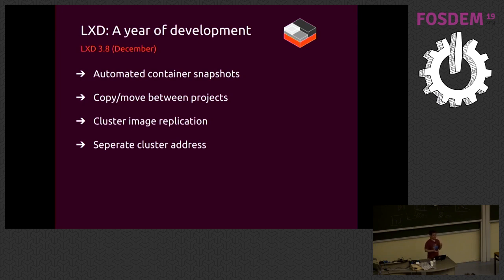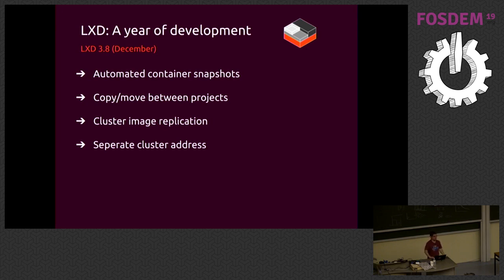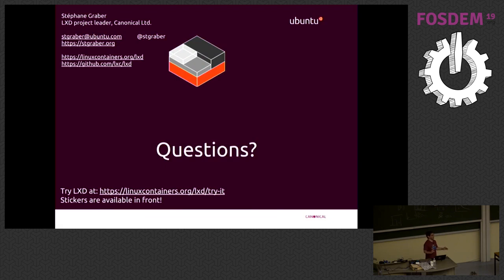Most recently: automated container snapshots — you give a cron-type pattern on your container and LXD generates snapshots automatically. We added support for moving containers between projects, support for replicating images within a cluster to prevent losing images when a node goes down, and better configuration for which address clusters use for internal versus public traffic. That was a pretty busy year for a team of three — well, four now — people, and we expect next year to be just as busy.